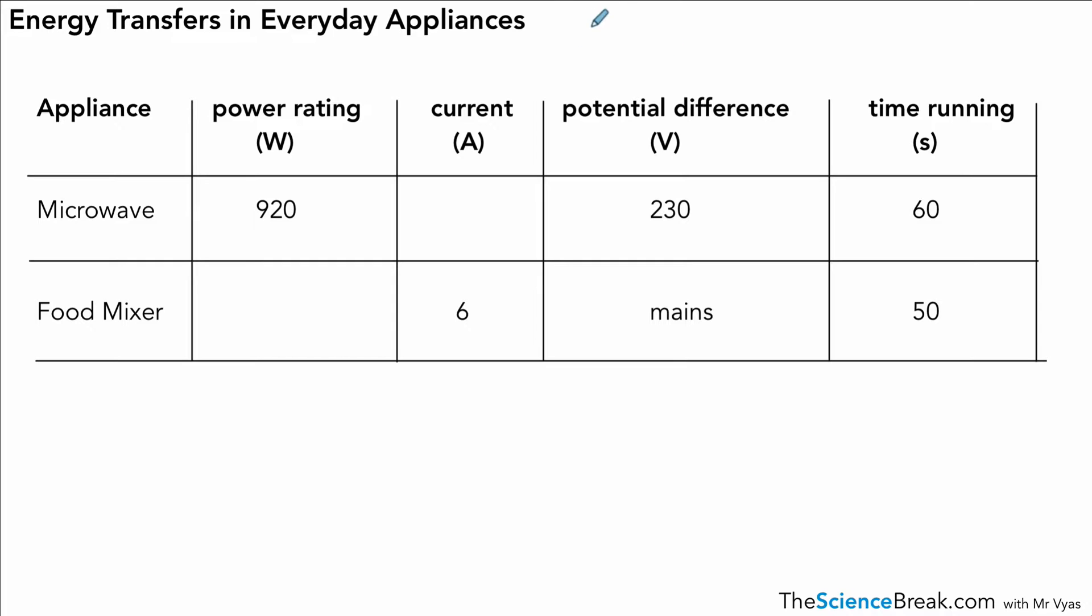Now, this here is a little bit of a challenge. If we are going to get the higher grades, the 7s, 8s, and 9s, we are going to have to be able to do slightly more challenging calculations. So the question is, for the information given there, we need to work out, firstly, the current and the power rating for those two appliances. And I want to know which of those transfers the most energy. So out of the microwave and the food mixer, which transfers the most energy?